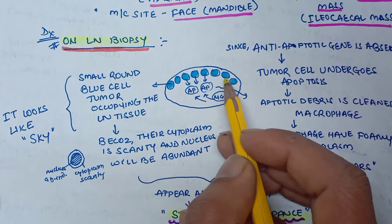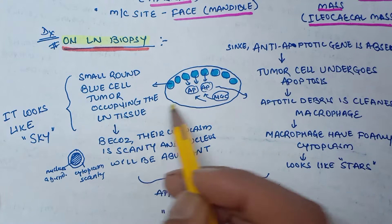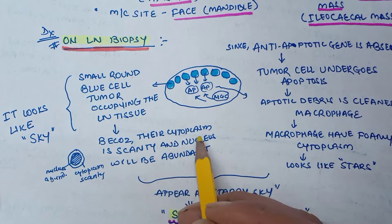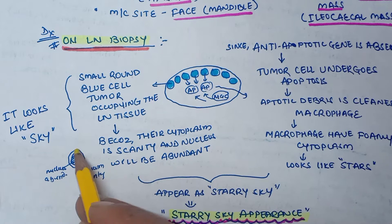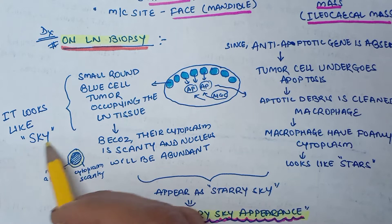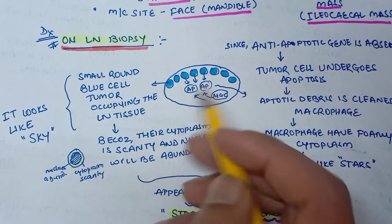On lymph node biopsy, you will see small round blue cell tumors occupying the lymphoid tissue. The cytoplasm is scanty with a prominent nucleus. Because of this, the cells give a characteristic sky-like appearance — it looks like a sky due to the small round blue cell tumor pattern.